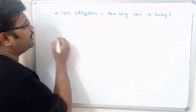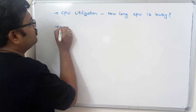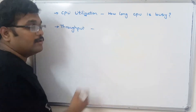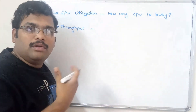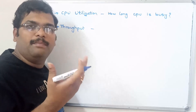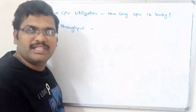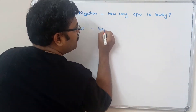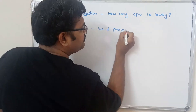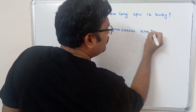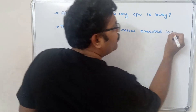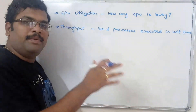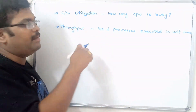The second criterion is throughput. As mentioned, a number of processes will be in the ready state and each process is given to the CPU one at a time. Throughput means the number of processes executed in a unit time — in a particular time period, the number of processes being executed by the CPU.